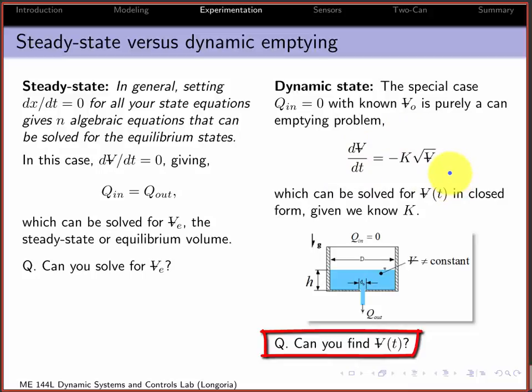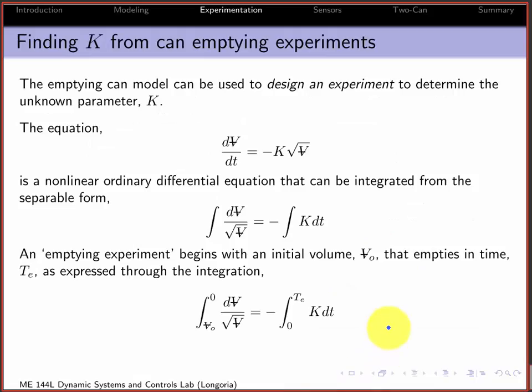So if you consider that case, the emptying can model, you can actually use that to design an experiment to find K. So you start off with that ODE, and you can see that that's actually a separable, simple, nonlinear ODE. The integral of dV over the square root of volume is minus the integral of K dt.